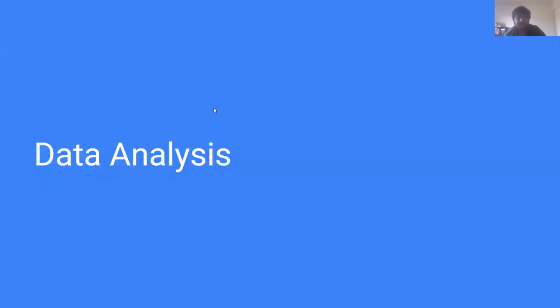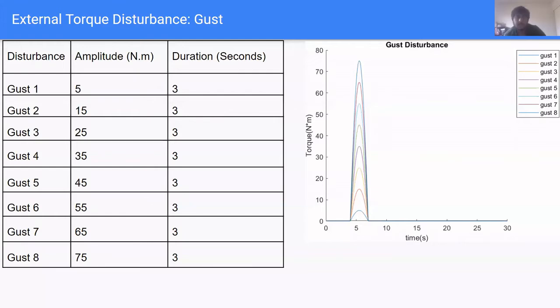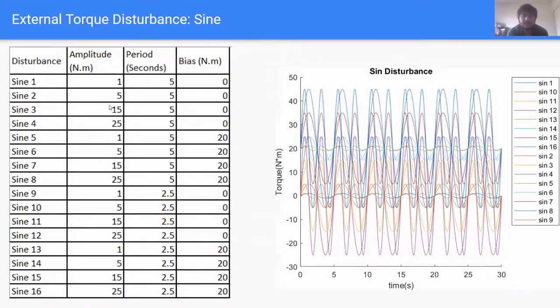This is our data analysis section. For our gust external torque disturbances, we have eight of these disturbances. The amplitude varies from 5 Nm to 75 Nm, and the duration for each is about 3 seconds. For our sine external torque disturbances, we have 16 of these disturbances. The amplitude varies from 1 Nm to 25 Nm. We have a low frequency period of 5 seconds and a high frequency period of 2.5 seconds. The bias varies from 0 to 20 Nm. This results in sine torque disturbances that range from 0 Nm to around 45 Nm.